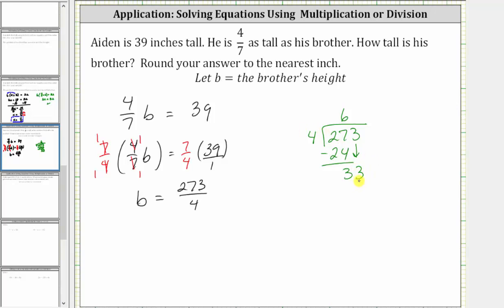Determine how many fours in 33, which is eight. Eight times four is 32. We subtract. We have a remainder of one, but because we're told to round to the nearest inch, we need to go out to one decimal place.